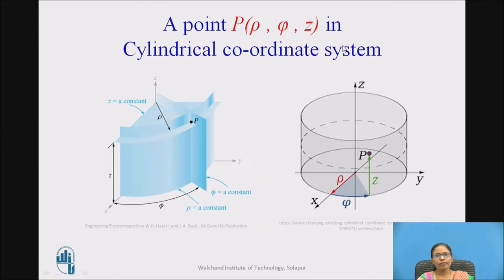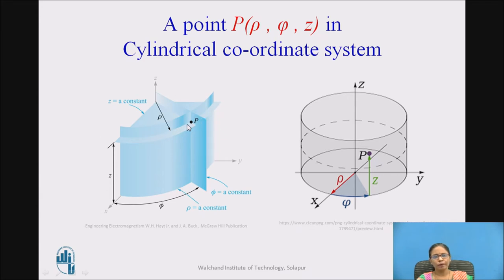A point (rho, phi, z) in the cylindrical coordinate system can be located by the intersection of all three surfaces: the rho-constant cylinder, the z-constant plane, and the phi-constant plane. The intersection of these three gives us the point P(rho, phi, z). Equivalently, we can consider a point on a cylinder at radius rho, at height z, making an angle phi with respect to the x-axis. This is important to remember: phi is the angle made with respect to the x-axis.